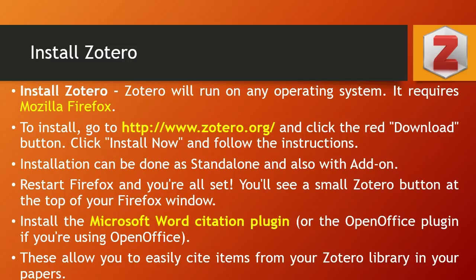Once installation is done, restart Firefox or Jotero if you installed the standalone version, and you will observe the Jotero button appearing on the right side of the browser. If you also want to cite references in your articles, you need to install the citation plugins available on the Jotero website, which allow you to easily cite items in your papers.